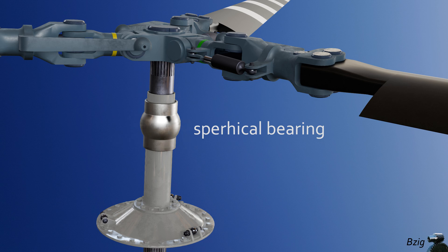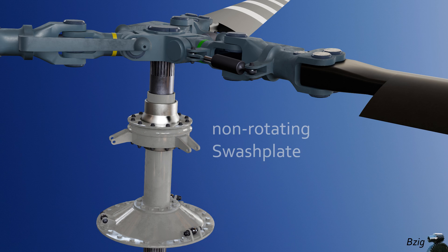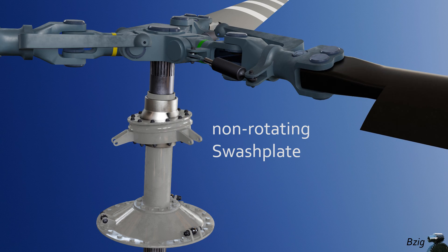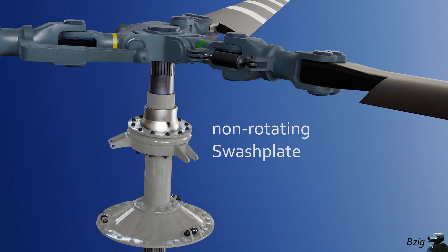On this adapter we add a spherical bearing that slides up and down. And around this spherical bearing we mount the non-rotating swashplate. The non-rotating swashplate can tilt in the XY axis, and because it's attached to the sliding spherical bearing, it can also translate in the Z axis.